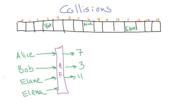Right here we have a hash table with three names in it so far. We've created the hash table to be an array of size 15, and we've put three names in it: Alice, Bob, and Elaine, which got put into slots 7, 3, and 11 respectively. And now we have a situation where our hash function is going to give us a collision. When we put Elena in it, based on the way we wrote it, it's going to give us the same number.